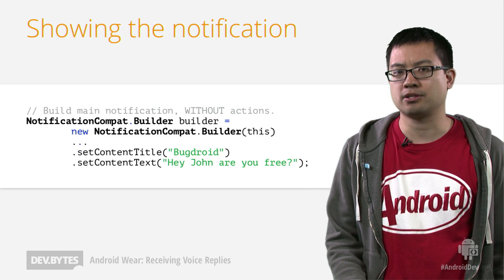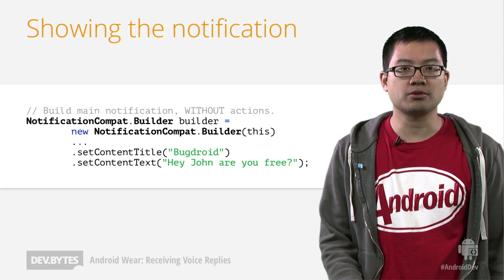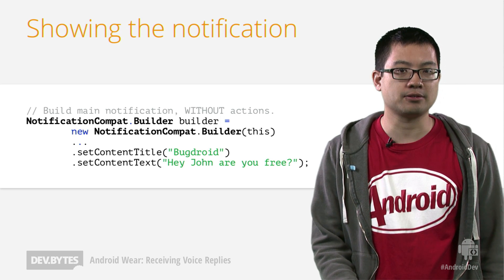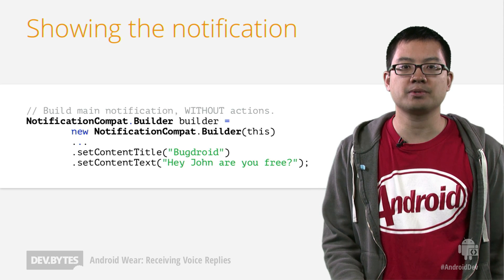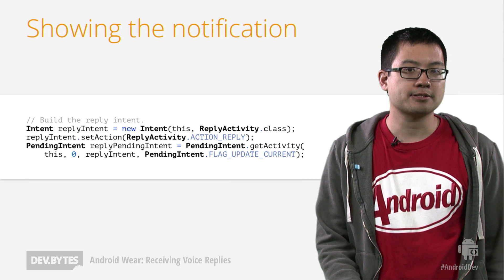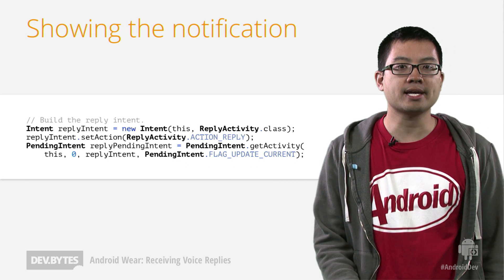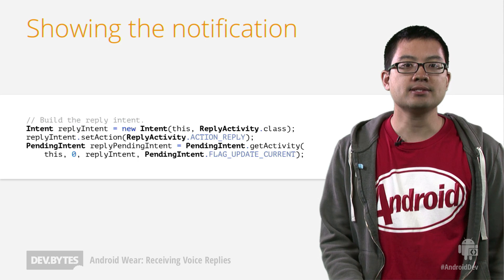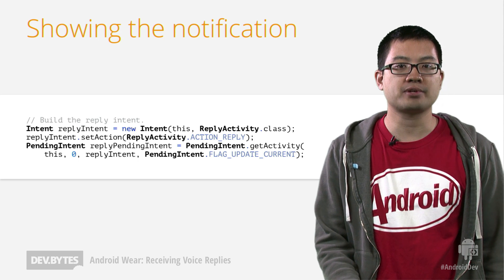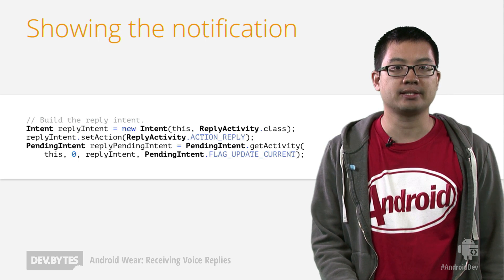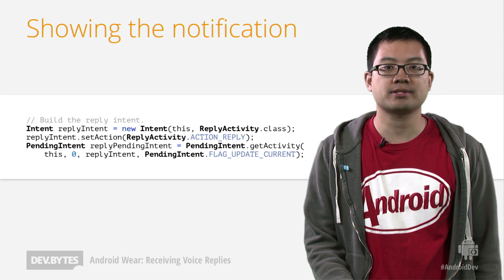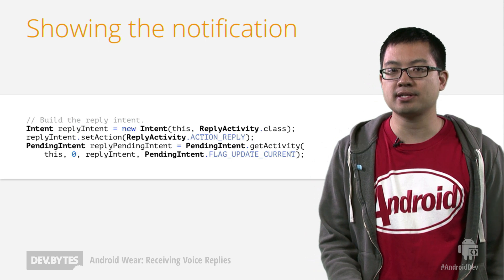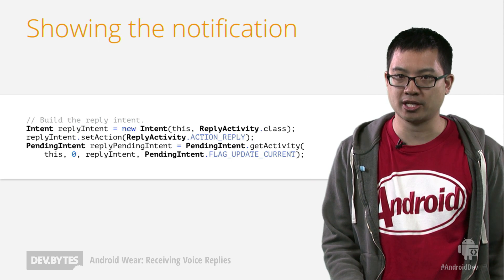Let's look at the code to build such a notification. First, we use the standard NotificationCompat builder to create the notification. We'll omit the reply action for now, since we'll add it later. Next, we'll build the reply action's pending intent. This intent will be started when the user presses the reply button on the phone. Note that the intent should be for an activity, because otherwise pressing the action won't close the notification shade.